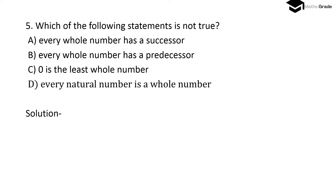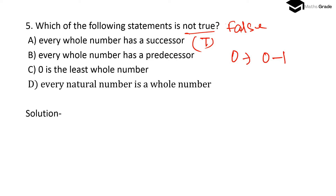Question number 5: Which of the following statements is not true? Option A: Every whole number has a successor — this is true, since 0 has successor 1 (0 + 1 = 1). Option B: Every whole number has a predecessor — this is false, because the predecessor of 0 would be 0 − 1 = −1, which is a negative integer, not a whole number. So every whole number having a predecessor is false.